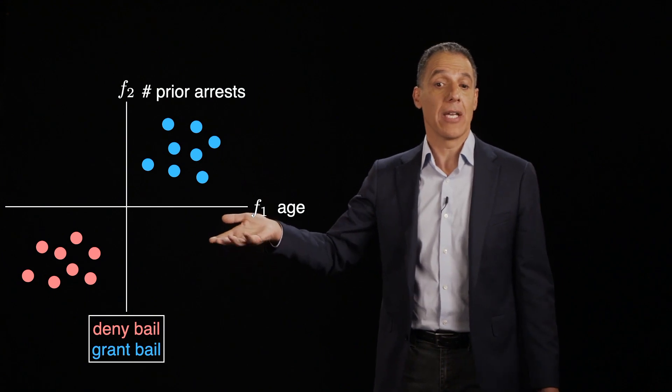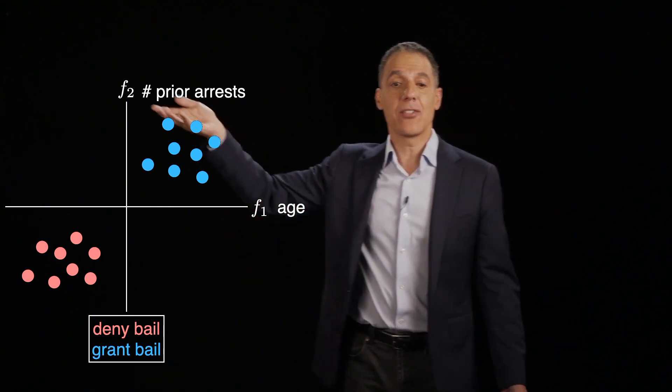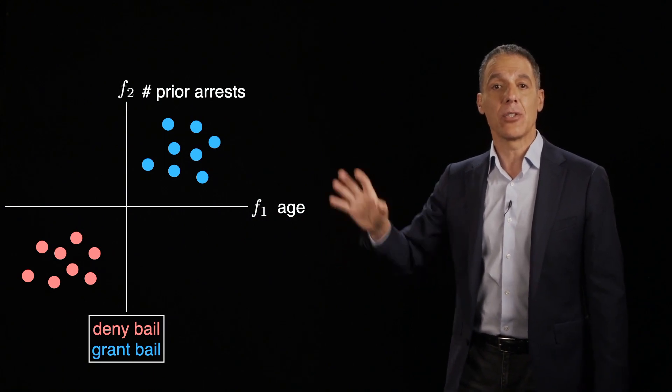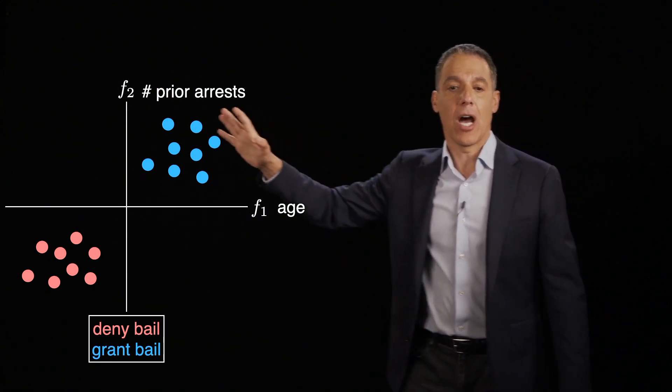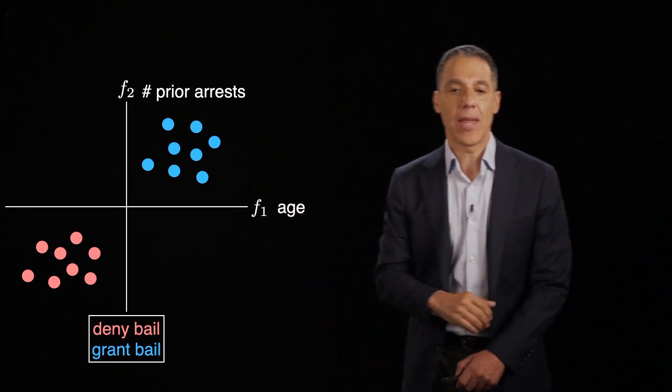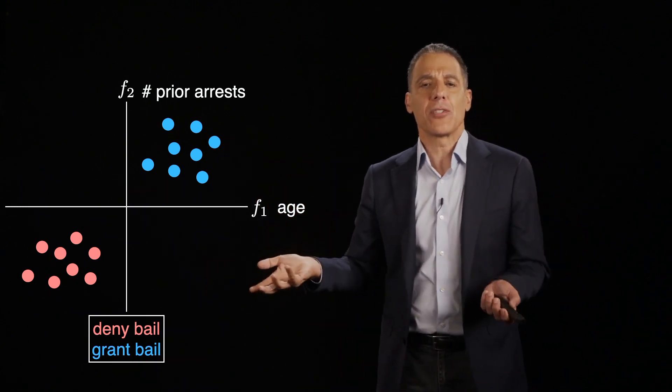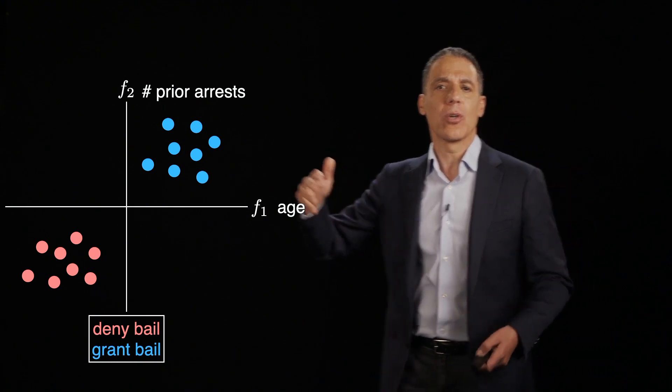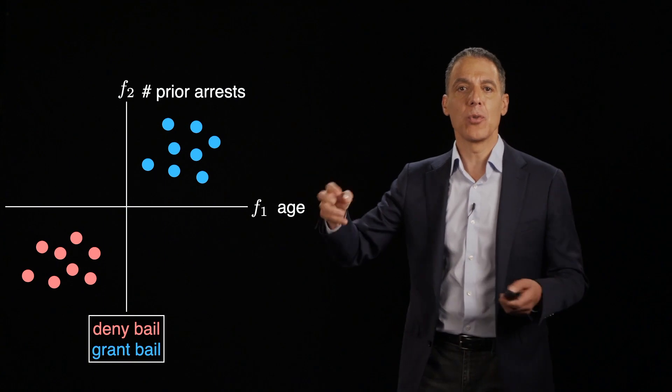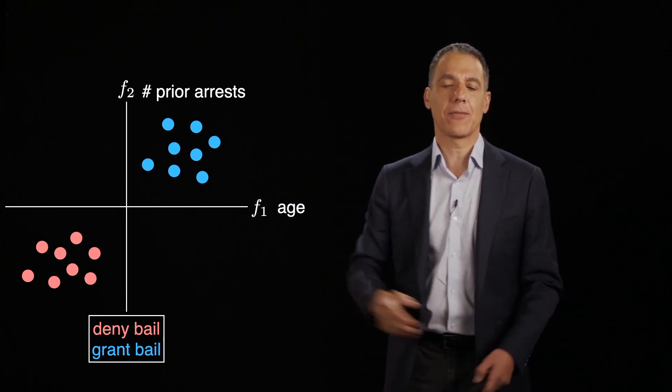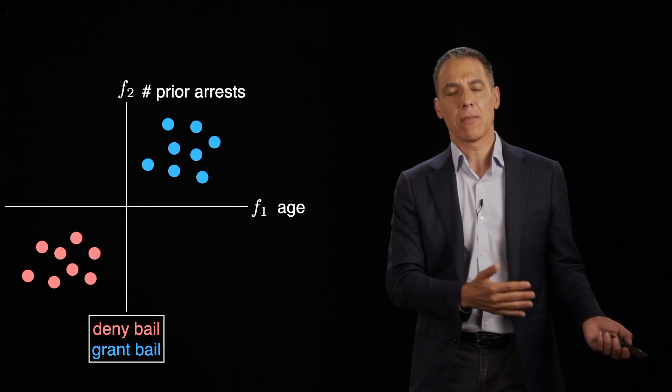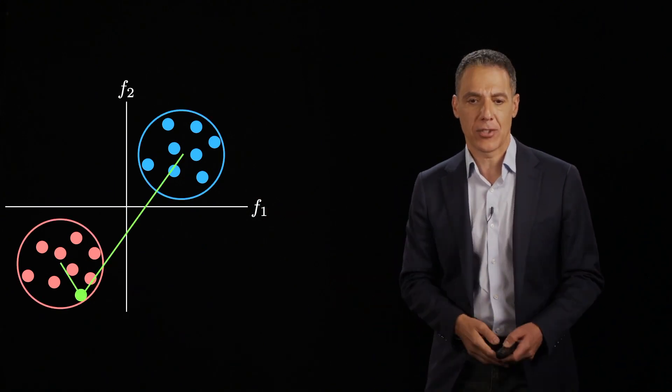Or maybe I want to do something like determine from somebody's age and the number of convictions that they have, are they likely to commit a crime in the future? And do I deny bail or do I grant bail based on that? So whatever your features are, whatever your output is, the classification is typically framed as a two, three, or four class classification problem. And we've seen a couple of examples already, the least squares and the logistic regression.